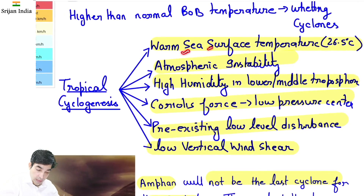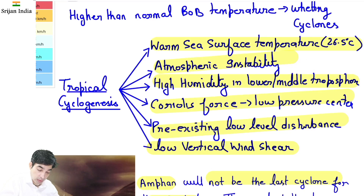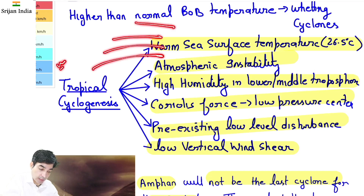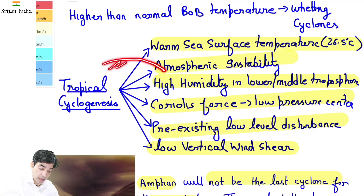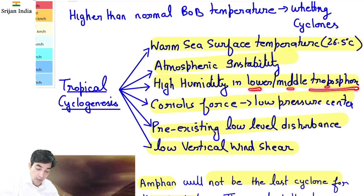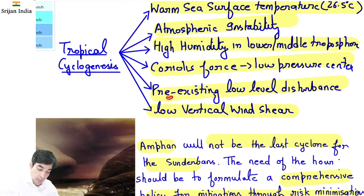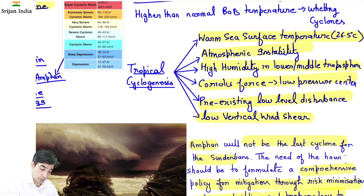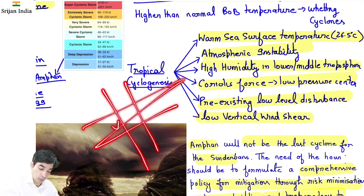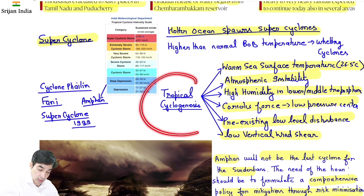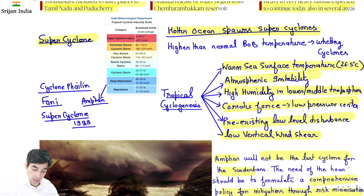Tropical cyclogenesis ke liye conditions: pahla — warm sea surface temperature honi chahiye, takriban 26.5 degree centigrade. Atmosphere mein instability honi chahiye. Humidity lower or middle troposphere mein — jo atmospheric activity aur weather phenomenon hote hain woh troposphere mein hote hain. Phir Coriolis force hona chahiye takhi rotation low pressure center mein ho. Pre-existing low level disturbance hona chahiye. Aur low vertical wind shear hona chahiye — zyada shear hoga toh cyclone toot jayega.